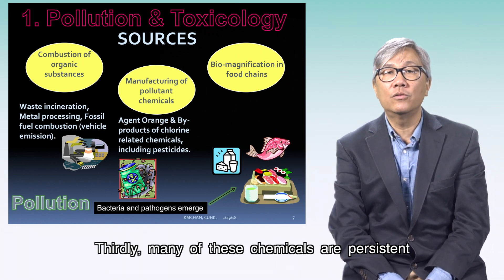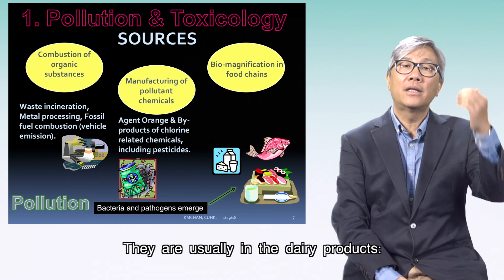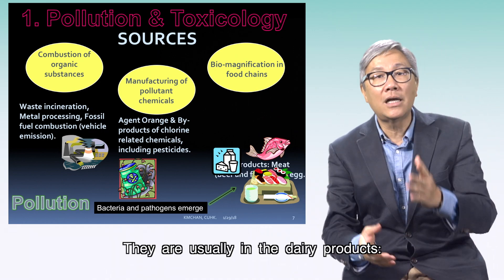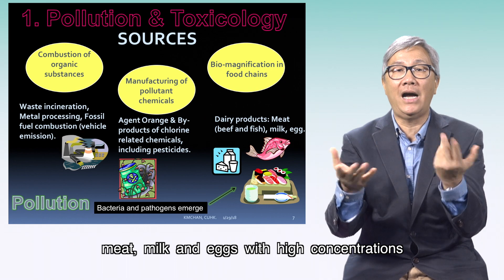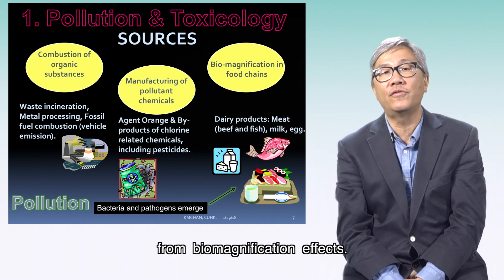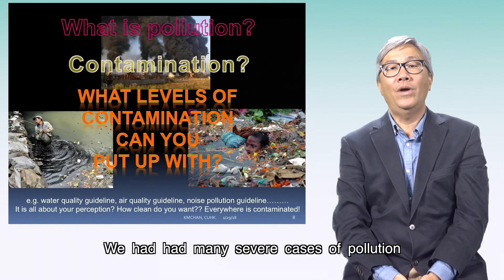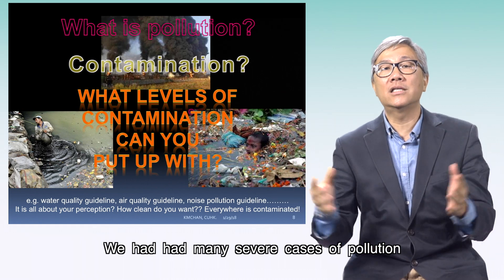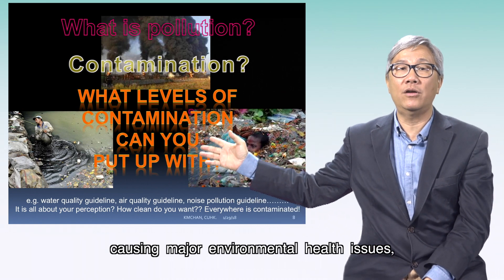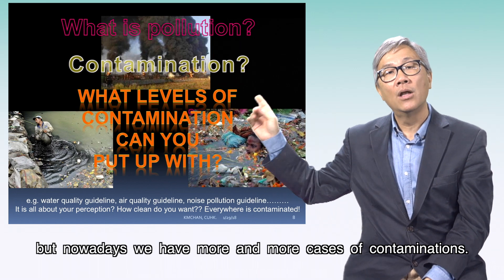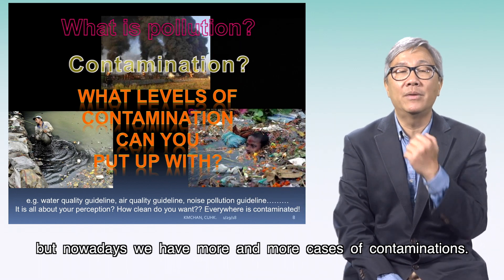Thirdly, many of these chemicals are persistent and already in the food chains. They are usually found in dairy products, meat, milk, and eggs, with high concentrations from biomagnification effects. We have had many severe cases of pollution causing major environmental health issues, but nowadays we have more and more cases of contaminations.